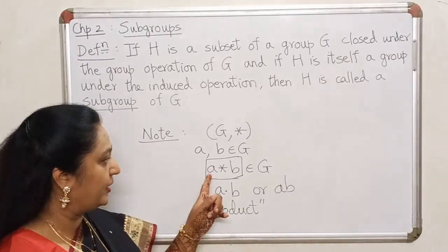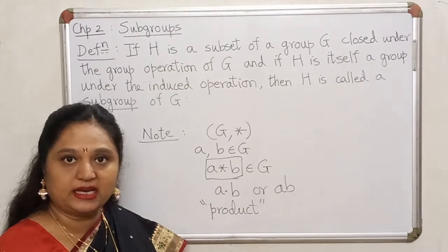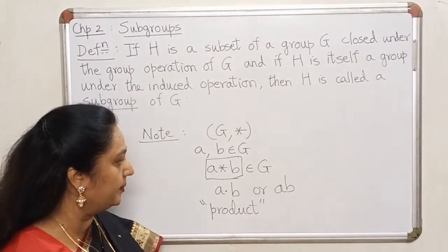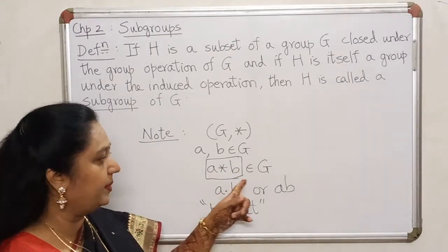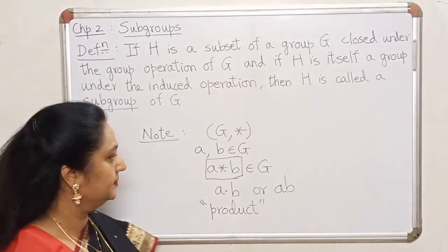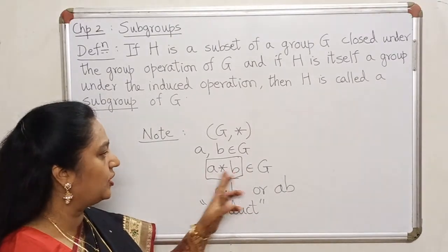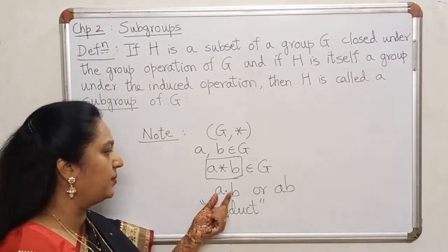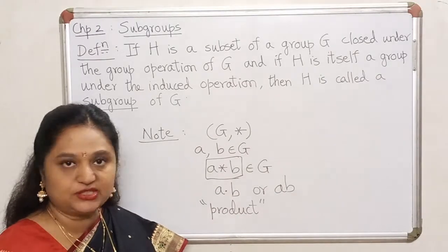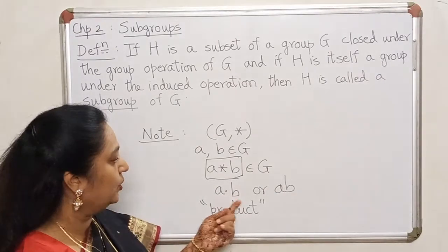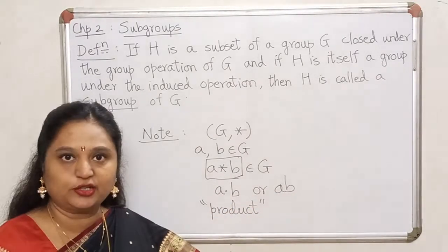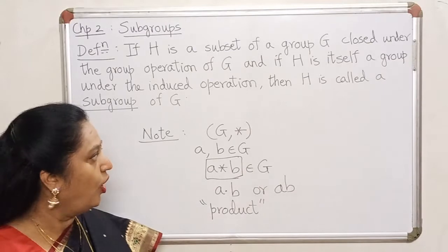If that star is addition in a specific example, it will be a plus b. But in general, instead of writing a star b, it will be much more convenient to write it as a dot b or ab and call it the product of a and b.